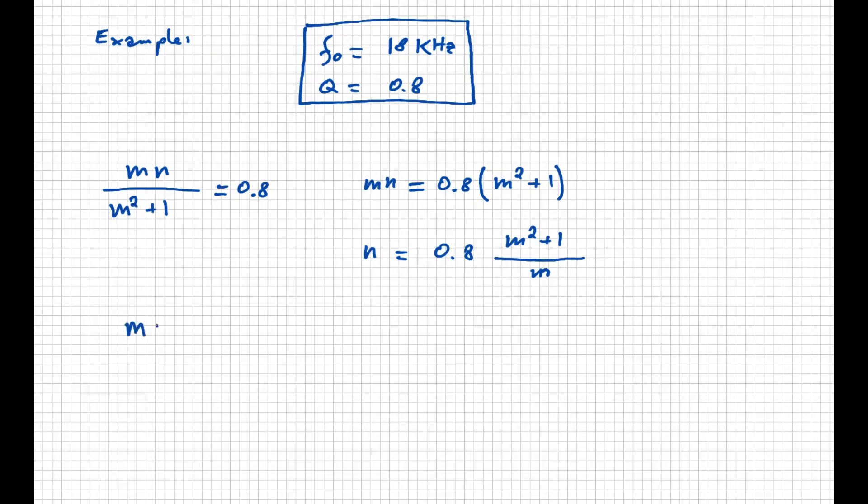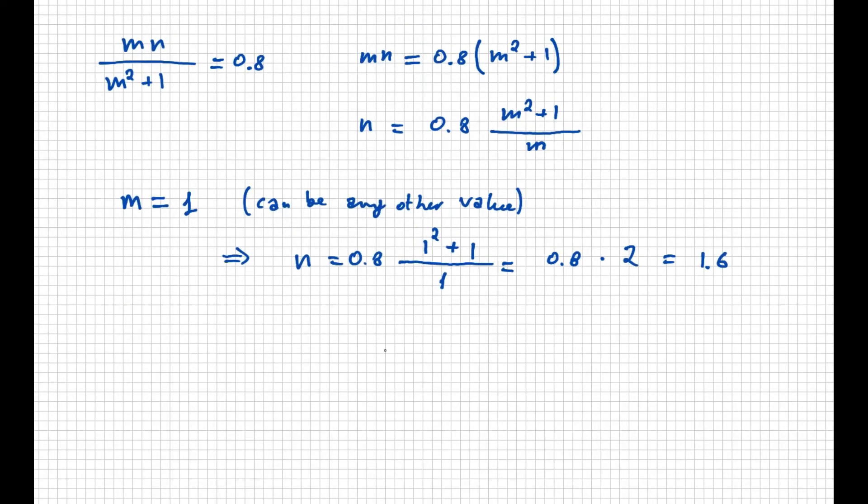We can make any assumption in those terms. I decided to set m equals 1 to make it easier to find the right resistors, but I could have used any other value, actually. But now, being m equals 1 from the equation, we find that n equals 1.6.